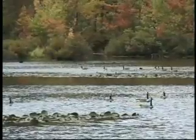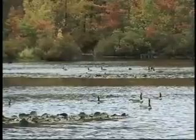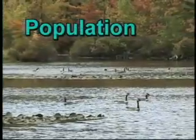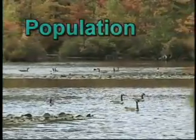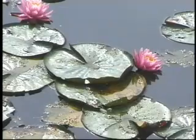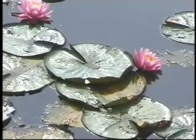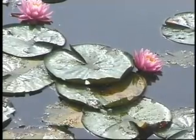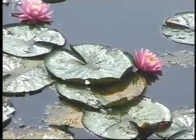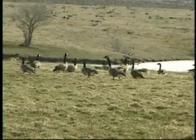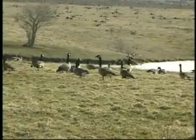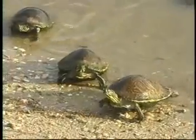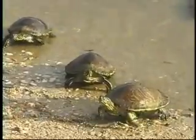A group of the same species in the same area is called a population. For example, the water lilies in this pond make up a water lily population. And the geese in this field make up a population, as do the turtles in this pond.